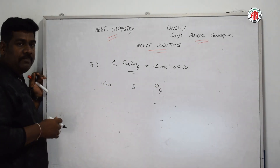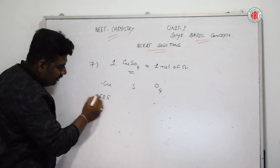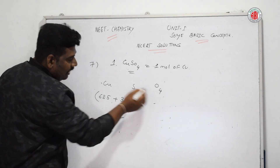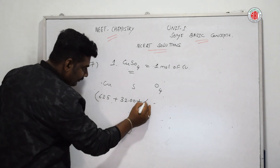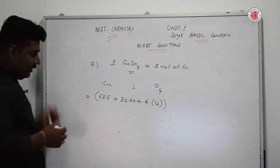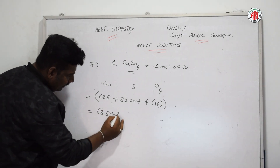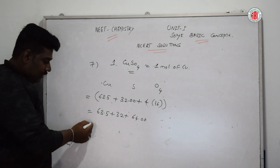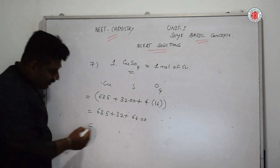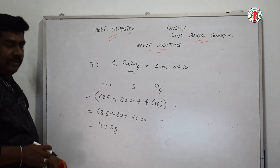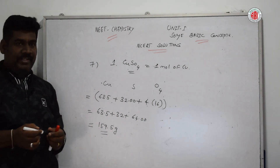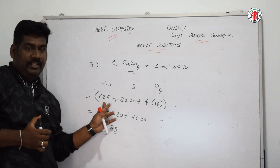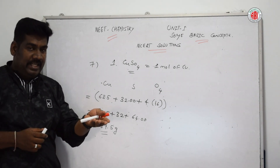Molar mass of CuSO₄: copper = 63.5, sulfur = 32.00, oxygen = 4 × 16 = 64. Adding all: 63.5 + 32 + 64 = 159.5 grams. This is the molar mass of copper sulfate. So 159.5 grams of copper sulfate contains 63.5 grams of copper.